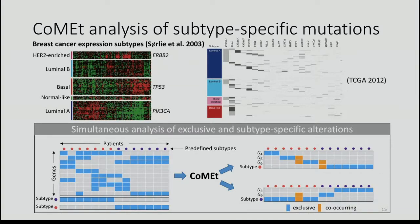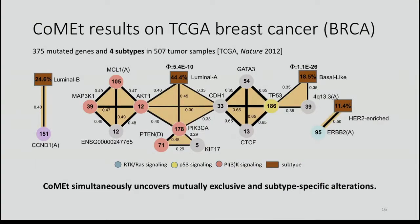With COMET, we allow simultaneous analysis of exclusive and subtype-specific alterations. The input is a gene-by-patient matrix marking which genes are mutated in which patients. If you know the subtypes in advance, you can add subtype events that are mutated in all samples except those of that particular subtype. When COMET identifies an exclusive set including a subtype event, you can see that the genes are largely exclusive with that subtype event, meaning almost all their mutations are occurring in that subtype — enabling both subtype association and exclusivity analysis simultaneously.